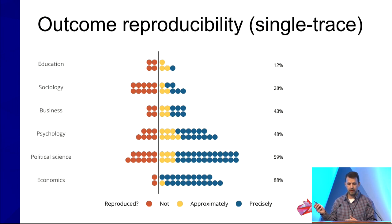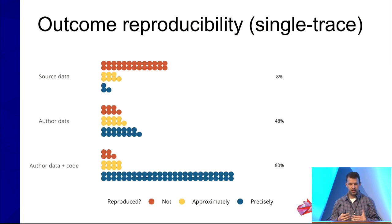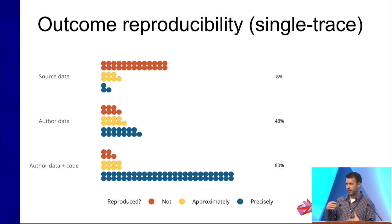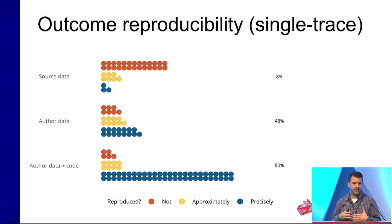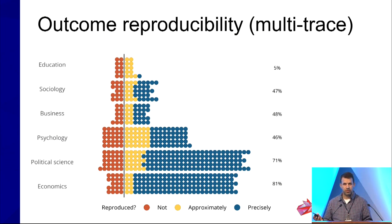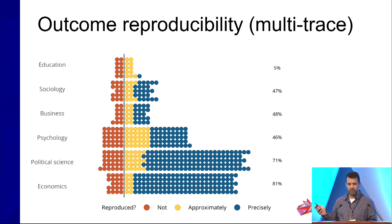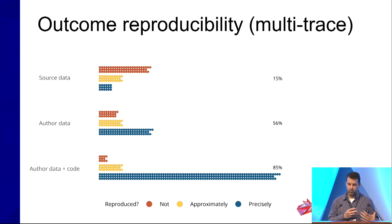There's another way to look at this data, which is how we did the reproduction. Sometimes you get what I'm calling author data, analytical data, and code — and if somebody shares that, we have a much higher percent chance of reproducing it, compared to if all I have is their data and no code and I have to reconstruct that analytical strategy. When we do the multi-trace approach, we're looking at over 500 reproductions. You see the same trend: variation across disciplines in how accurately we're able to reproduce from this outcome sense, and it's much easier when you have data and code compared to having to reconstruct any part of that pathway.